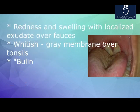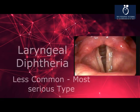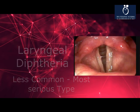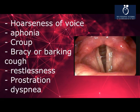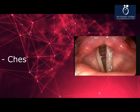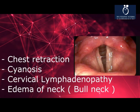Laryngeal diphtheria is less common but the most serious type. Symptoms include hoarseness of voice, aphonia, croup, brassy or barking cough, restlessness, prostration, dyspnea, chest retraction, cyanosis, cervical lymphadenopathy, edema of the neck, and bull neck appearance.